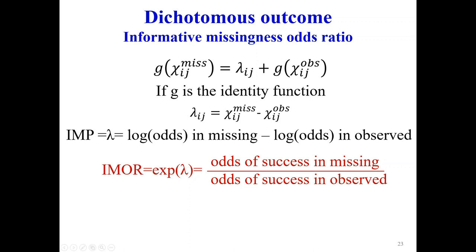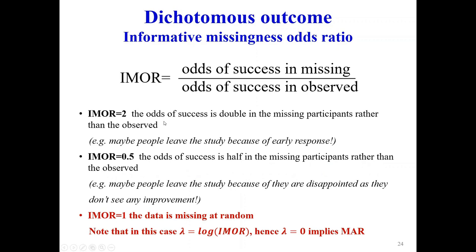For dichotomous outcomes, we relate the log-odds in missing to the log-odds in observed using the logit function. This gives us the IMOR parameter — the odds of success in the missing participants over the odds of success in the observed participants. If IMOR equals two, the odds of success is doubled in missing participants — perhaps people leave because they improved quickly. If IMOR equals 0.5, the odds of success is halved — people may leave due to lack of improvement. If IMOR equals one, the odds of success is the same in both groups.